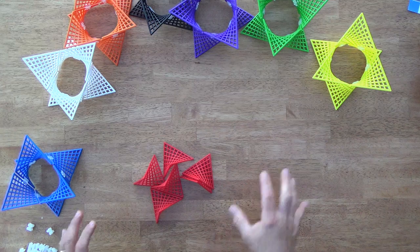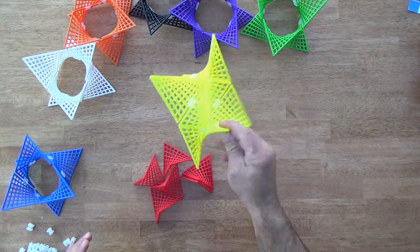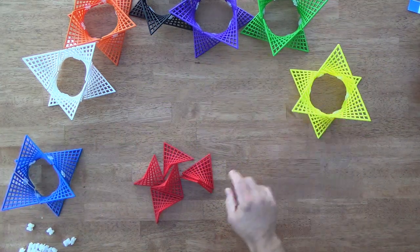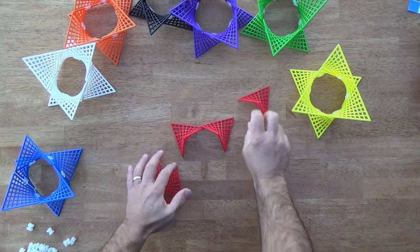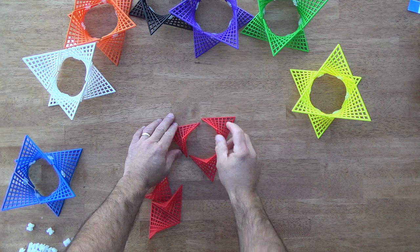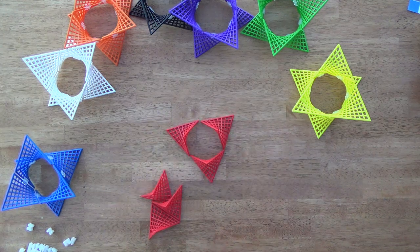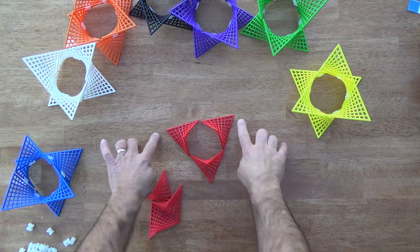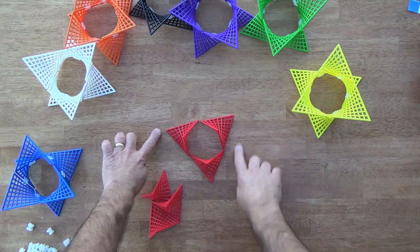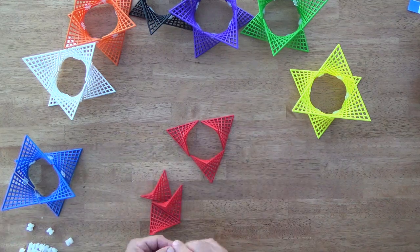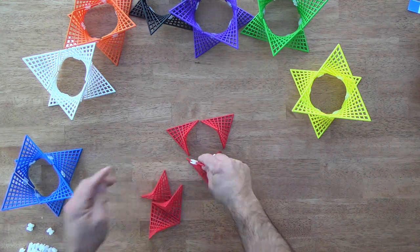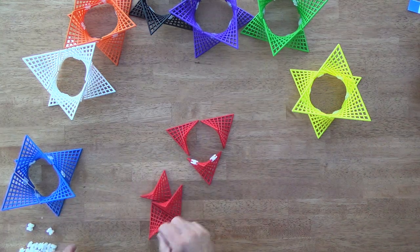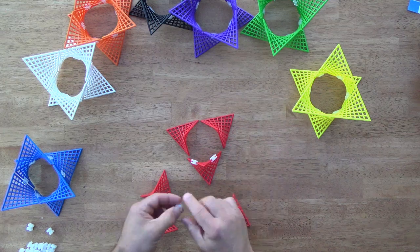But here we're going to have each of the triangular anti-prisms be one color. Just to review how to make those, easiest to take three of the tiles and arrange them like that with vertices pointing outward to make a nice equilateral triangle. And we can actually put all these connectors here in place.